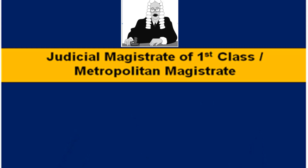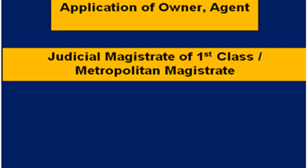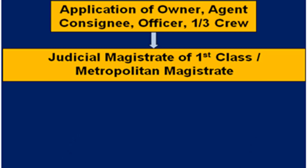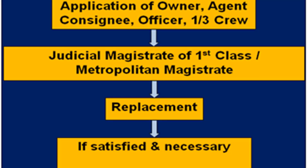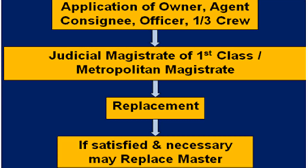In section 372, it states that a Judicial Magistrate of the first class or Metropolitan Magistrate may, upon the application of the owner of any ship or his agent, or of the consignee of the ship, or of any certificated officer, or of one-third or more of the crew, if satisfied that it is necessary, remove the master of any ship and thereafter appoint a new master. A lot of importance and trust is given to the cargo owner — the consignee of the ship — who has a say in the removal and replacement of the master.